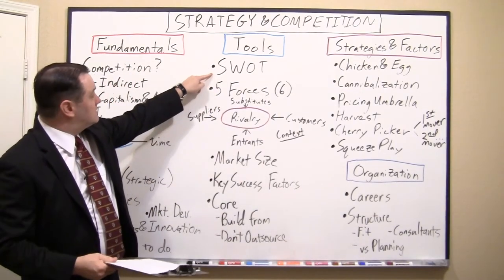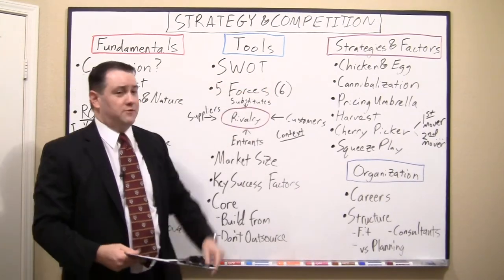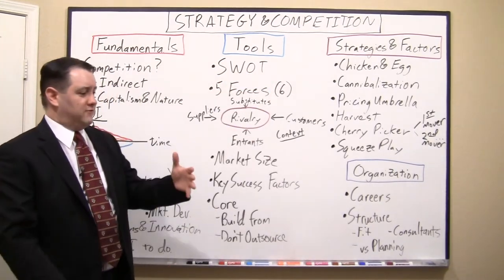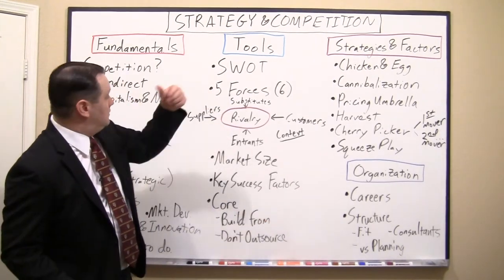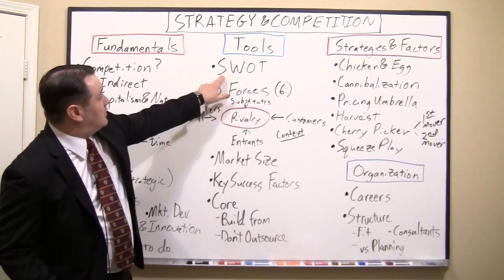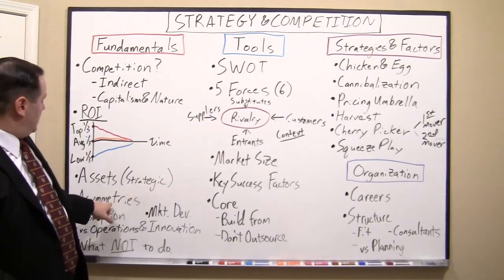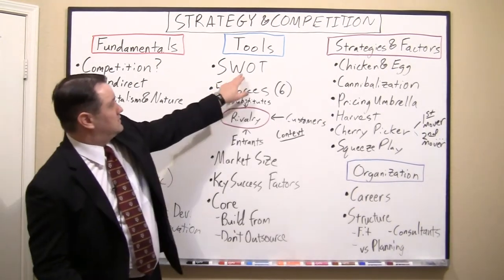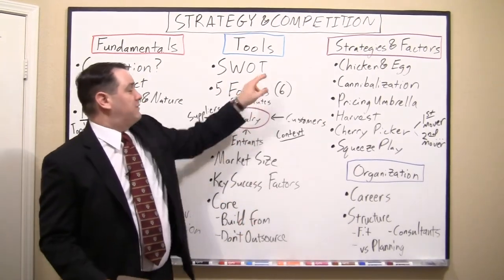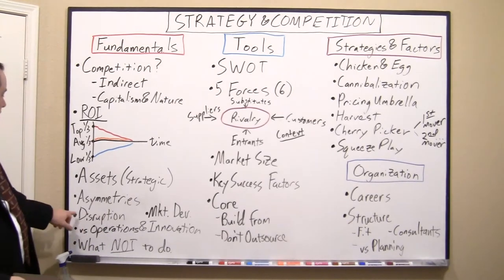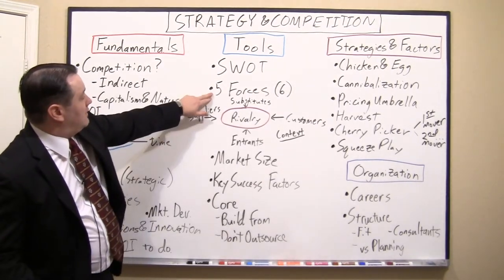One tool is the SWOT analysis — Strengths, Weaknesses, Opportunities, and Threats. This is a common layout for strategy processes. Companies look at what their strengths are relative to competitors — those assets — and weaknesses where competitors have better assets. Opportunities are market segments that are growing, and threats are ways they could themselves be disrupted. That's one tool of analysis.